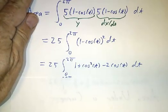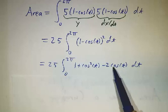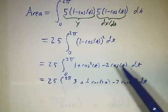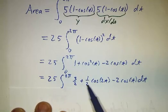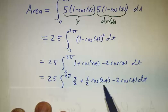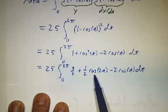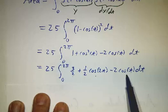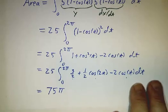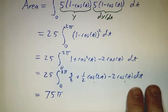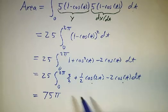And we do that by just multiplying it all out. 1 plus cos squared minus 2cos of t. And then we use a trig identity to handle the cos squared. We replace the cos squared with 1/2 plus 1/2 of cos of 2t. And that we know how to integrate 3/2. We know how to integrate cos of 2t. We know how to integrate 2 cos of t. And we get the answer 75π. Which incidentally is exactly 3 times the area of the circle of radius 5. Curious fact.